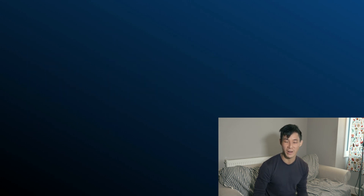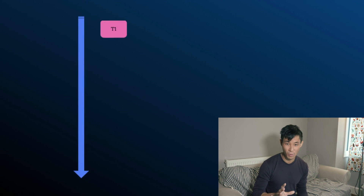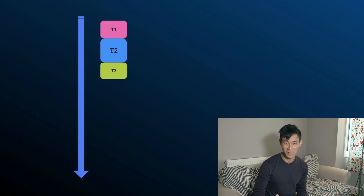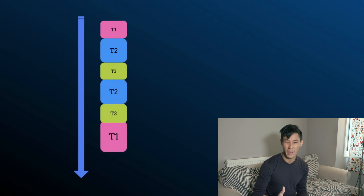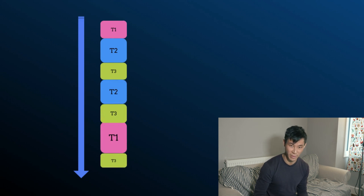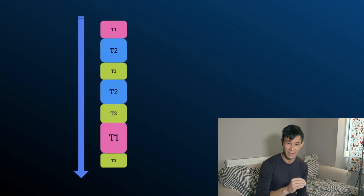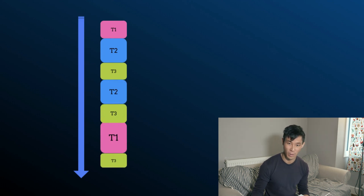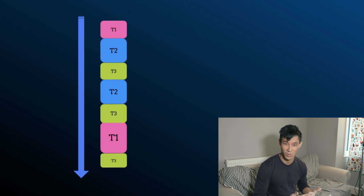Now this leads us to the single-threaded asynchronous model. The single-threaded asynchronous model allows us to perform multiple tasks at the same time. But unlike the multi-threaded model, the programmer knows that only one task will be executing at any given time. This makes the async model somewhat simpler than the multi-threaded one. One major difference with the async model is that the programmer decides when one task should suspend and give control to a different task.